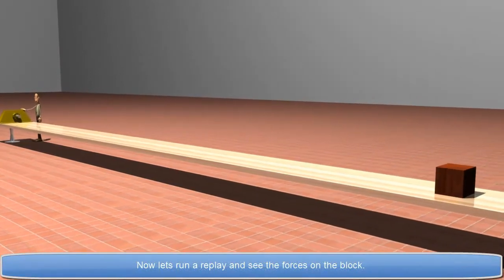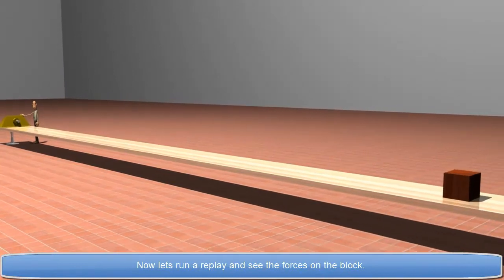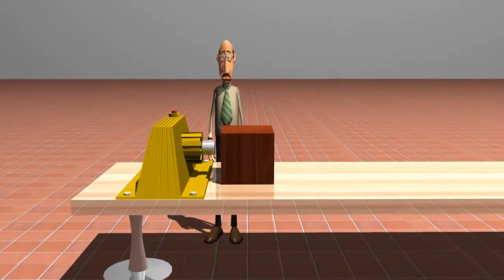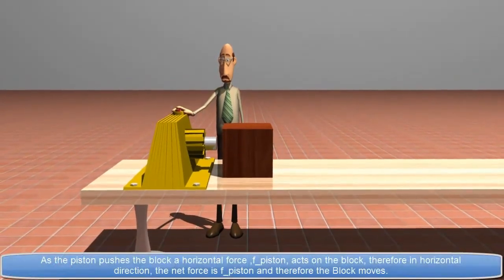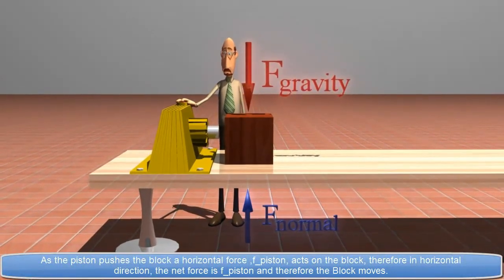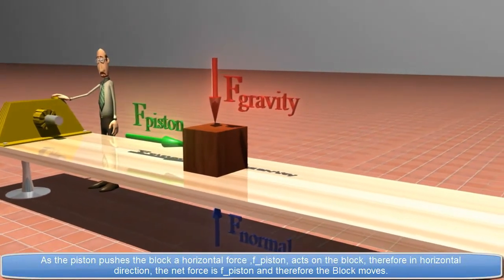Now let's run our replay and see the forces on the block. As the piston pushes the block, a horizontal force, F piston, acts on the block.